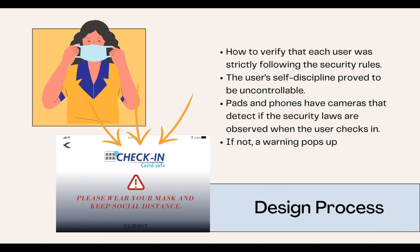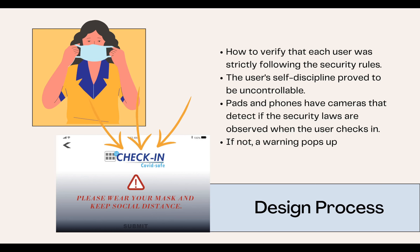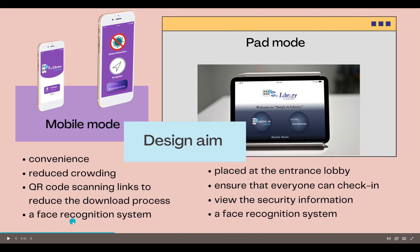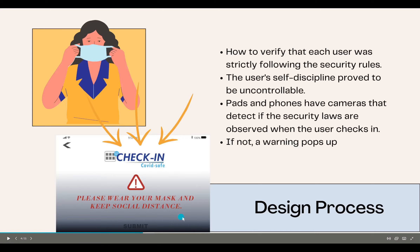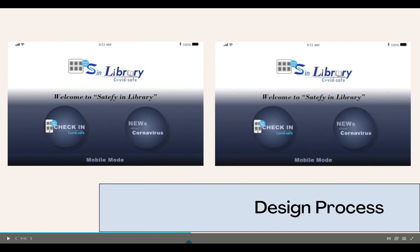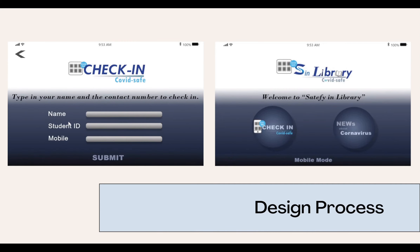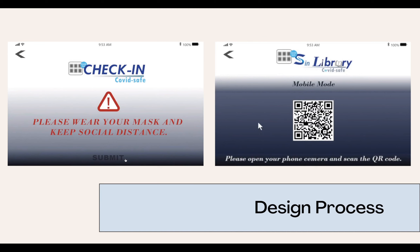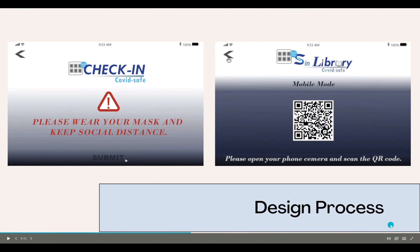The pad and phone cameras detect whether security rules are being followed when the user checks in. If not, a warning pops up. In general, the safety and library app provides COVID-19 live news and a check-in button on the home page. If the system finds that the user is not wearing a mask after completing the check-in, a warning will be shown.